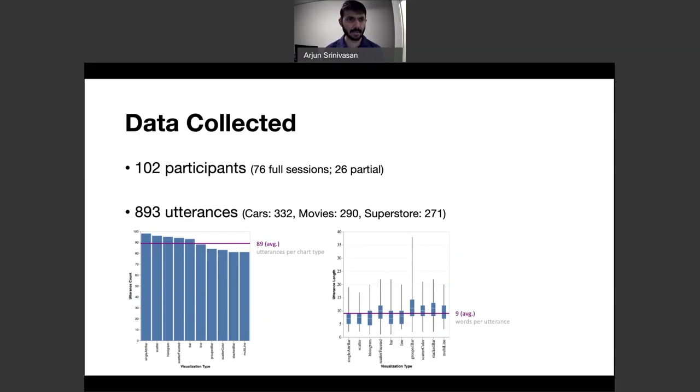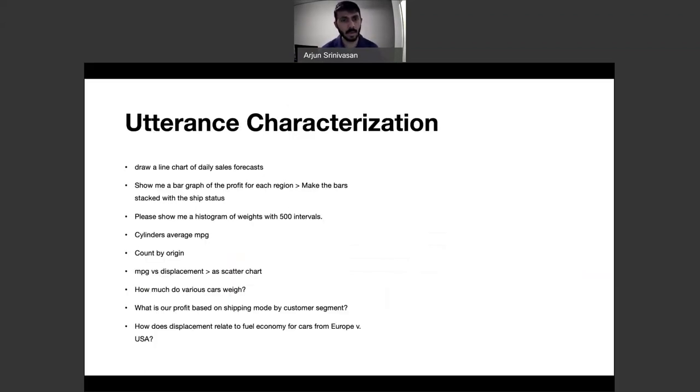There were about 89 utterances per chart type, and individual utterance lengths varied between 1 and 38 words, with an average of 9 words per utterance. To give a glimpse of the collected data, here are some utterances we collected from the study. To characterize these utterances, we looked at them from two major dimensions.